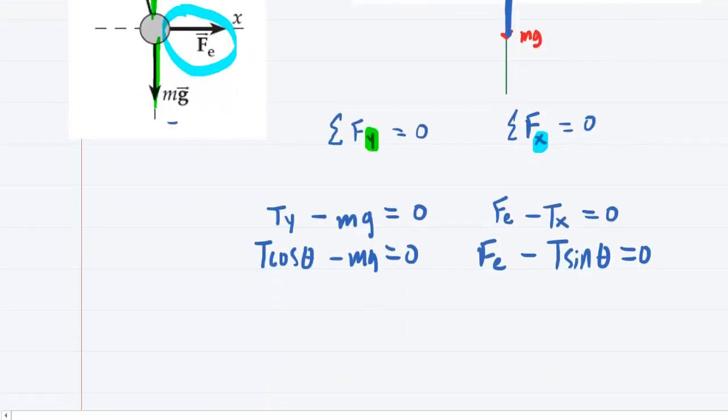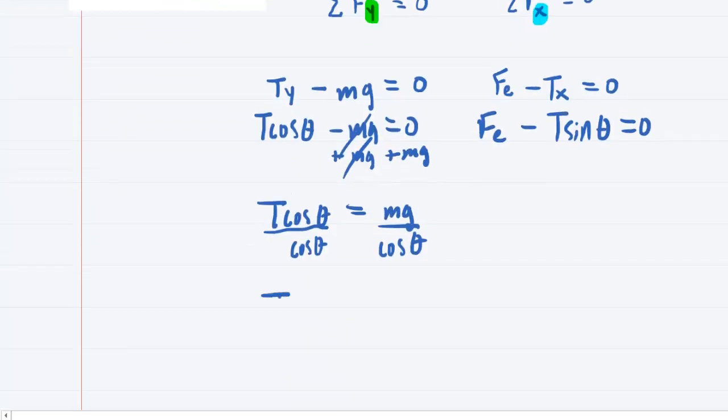What we'll do next is take the equation we have in the y direction. We're going to go ahead and add mg to the other side. This way, we can see that T cosine of theta is equal to mg. And then if we divide both sides of this equation by cos theta, what we'll end up doing is isolating an expression for tension. We will see in a moment why this is advantageous to us. So we have mg over cos theta is equal to the tension.